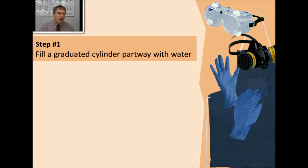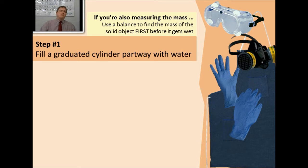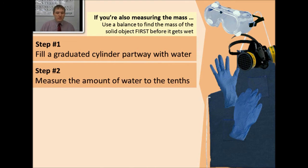Now that we've filled our cylinder with water, we're almost ready to put an object into it. But first you have to ask yourself, am I also measuring the mass of the object? If I want to measure the mass of an object, I want to make sure I do that first before I put it in the graduated cylinder because its mass is going to change when it has water molecules clinging to the outside of it. You want to make sure that if you're going to measure the mass, you do that before you put the object into the graduated cylinder full of water. Step two is to measure the amount of water that you start with in the graduated cylinder in tenths. You're measuring to the tenths place of precision.